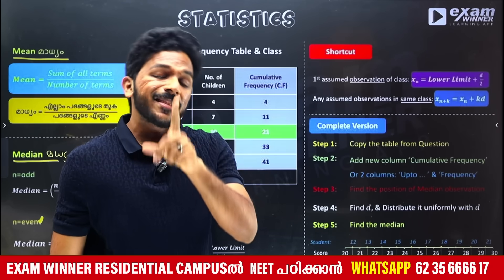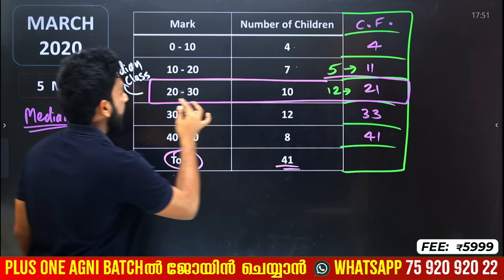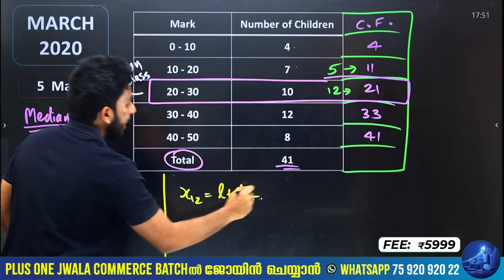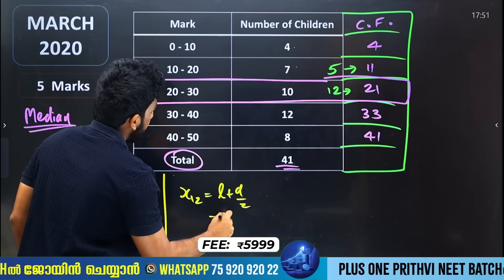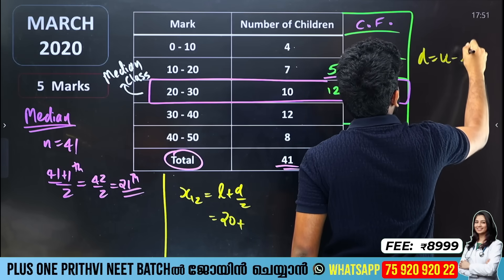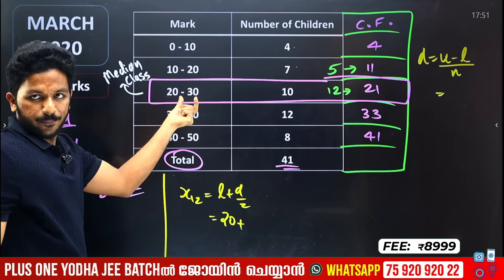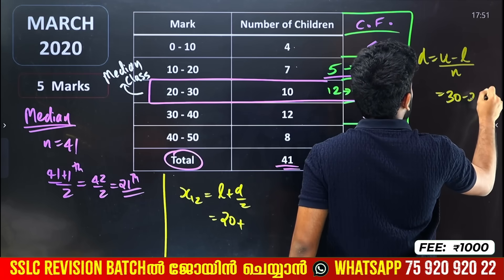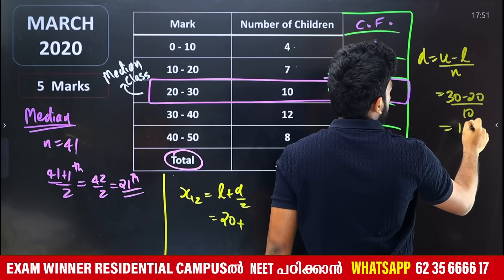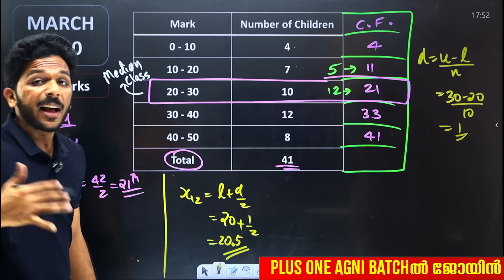The formula for grouped data median is: L plus d divided by 2, where L is the lower limit of the median class. D equals upper limit minus lower limit divided by N — the class width. For example, 30 minus 20 equals 10 for the upper and lower limits. Dividing by 10 gives d equals 1, so d by 2 equals 0.5. Then 20 plus 0.5 equals 20.5 as the assumed mark.